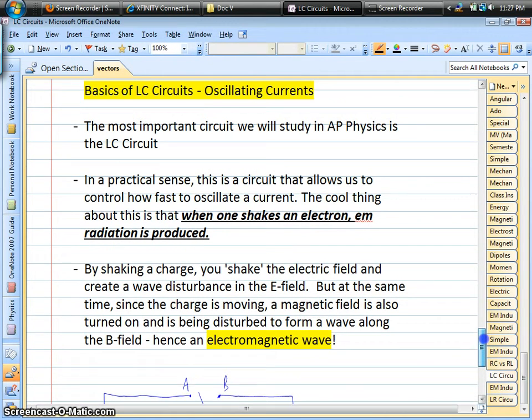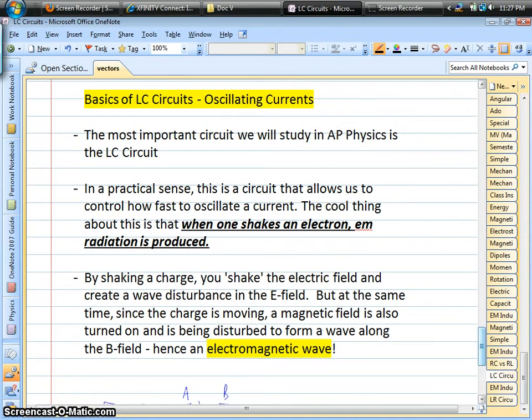Now, the idea behind this is, as we'll see in a second with the math, we produce an oscillating current, or an AC current. This is important in a very practical sense, because in classical E&M, the way we can think about making something like a light wave, any kind of electromagnetic radiation, we can do that by shaking charges, making them oscillate.